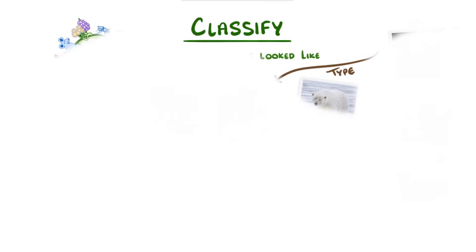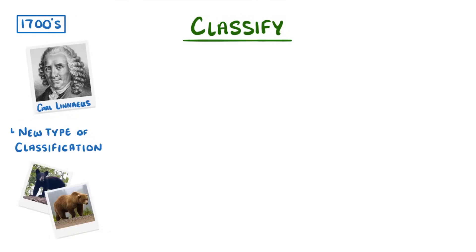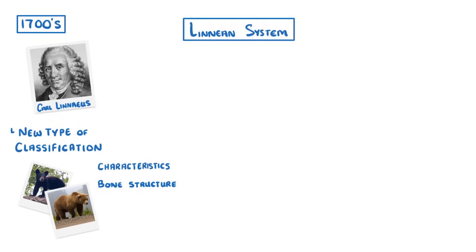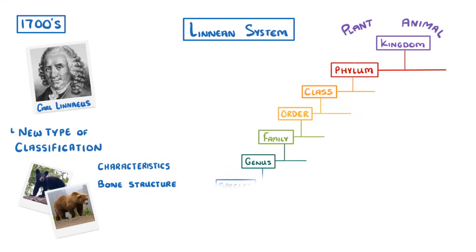To try and fix all these problems, in the 1700s, a man named Carl Linnaeus proposed a new type of classification, which groups species together according to their characteristics and bone structures. We call this the Linnaean system, and it groups species into kingdoms — such as plant or animal — then phylum, class, order, family, genus, and finally species.